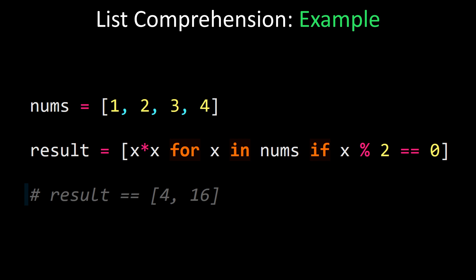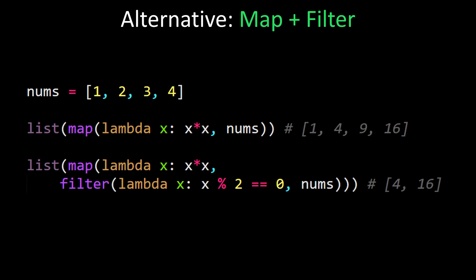Now some would argue that you can achieve the same kind of results with for loops, or a more direct comparison is the map and filter functions, which are also available in Python. So what would that look like?